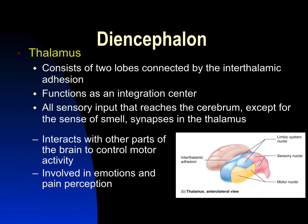Just above the hypothalamus is the thalamus, which has a right and left lobe joined at the midline of the brain. It functions as an integration center. All sensory input except smell reaches the cerebrum through the thalamus, and the thalamus performs the first processing, deciding what is important enough to be sent up to the cerebrum. It also interacts with other brain regions to control motor activity and plays a key role in emotion and emotional regulation.